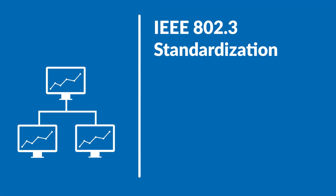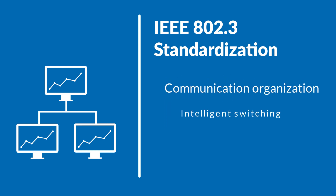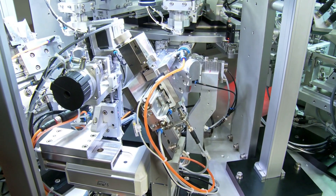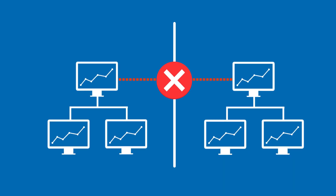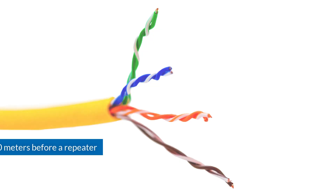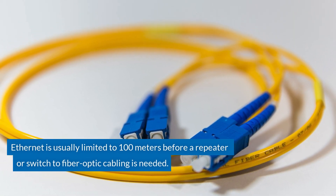Ethernet, defined by the IEEE 802 standard, has made big gains on plant floors and in process applications, mainly due to its multi-gigabits per second communication speeds, the simplicity and low cost of its Cat5, 5E, and 6 cabling, and communication organizing strategies such as intelligent switching and addressing that enable Ethernet to avoid data collisions and behave more deterministically on the plant floor. These attributes have overcome the fact that Ethernet's flavors may not talk to each other and that it's usually limited to 100-meter segments before a repeater or switch to fiber optic cabling is needed.